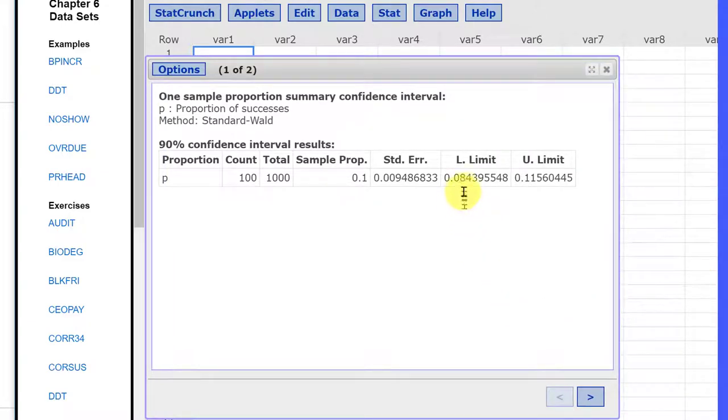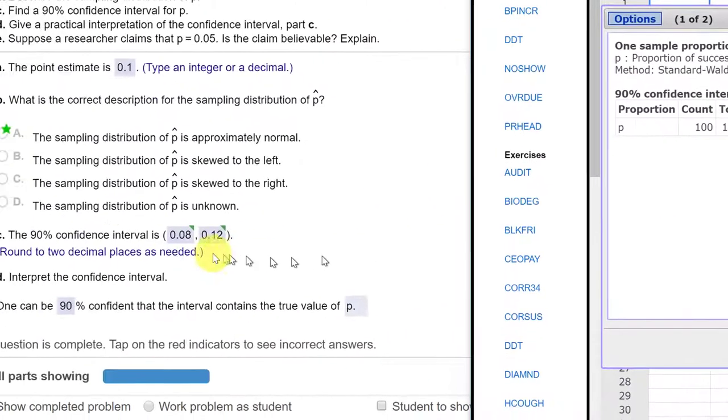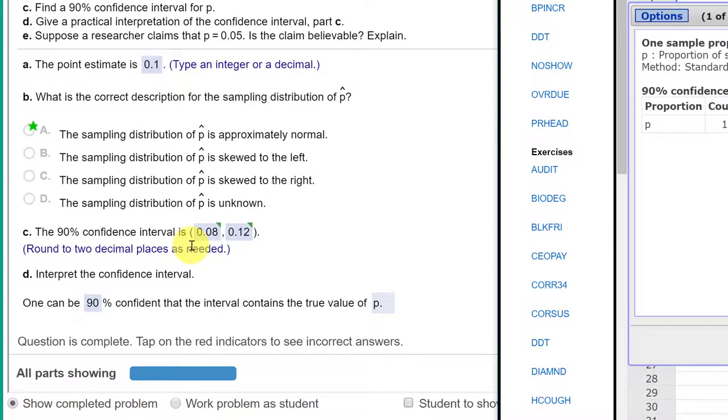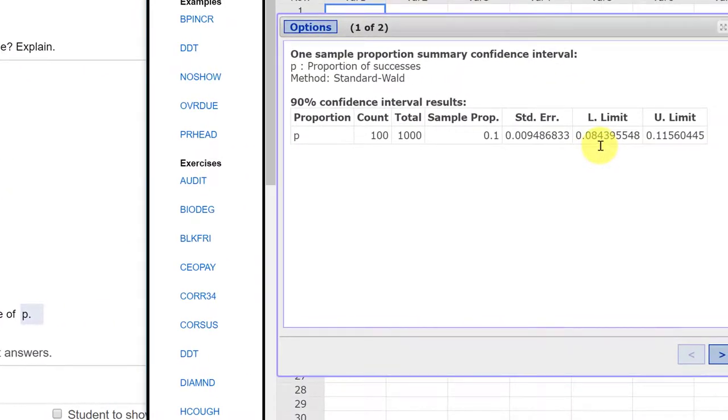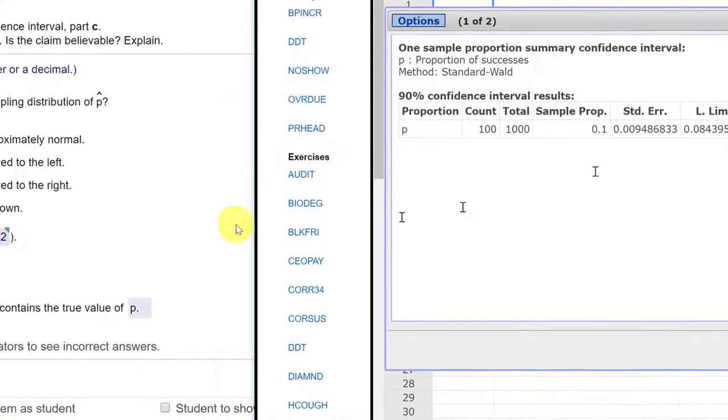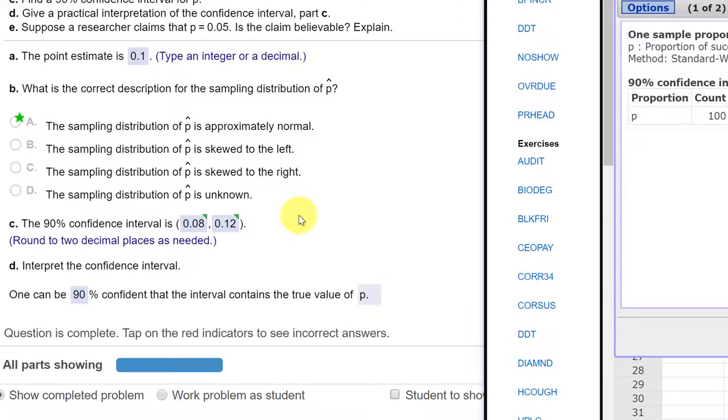And we get our results and you need to expand the box to see them all but you can see that our lower limit is 0.084 and our upper limit is 0.115 so they want two decimal places in their particular so 0.084 rounds to 0.08 and 0.115 rounds to 0.12 which is the answer they have there.